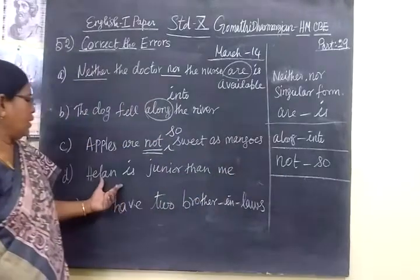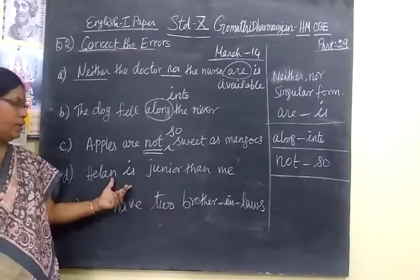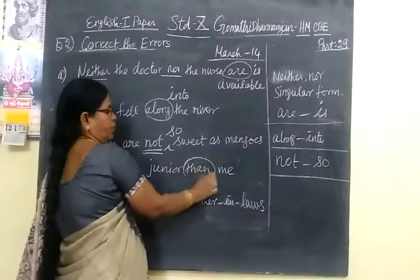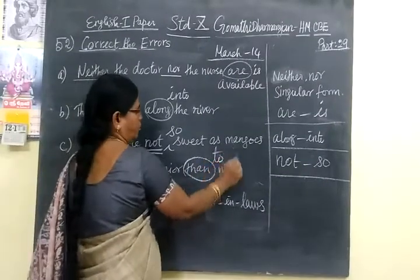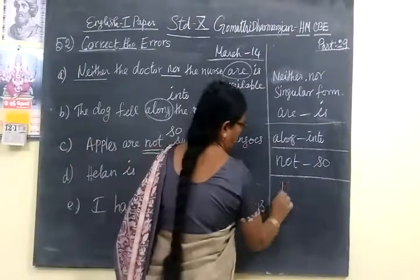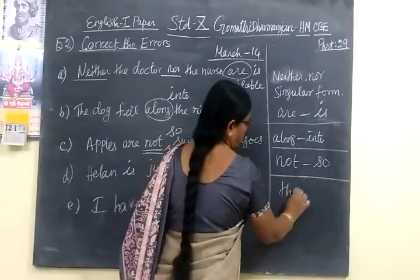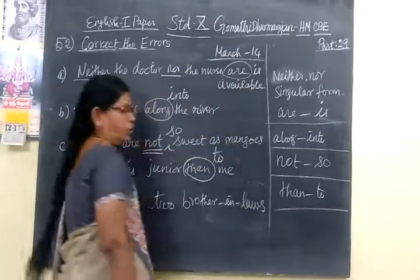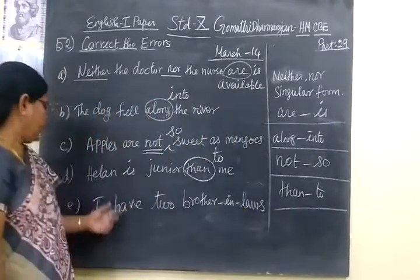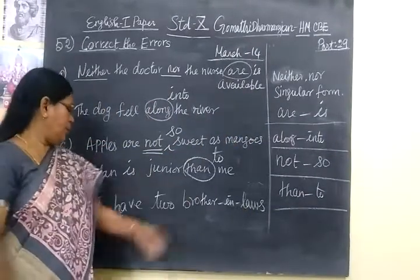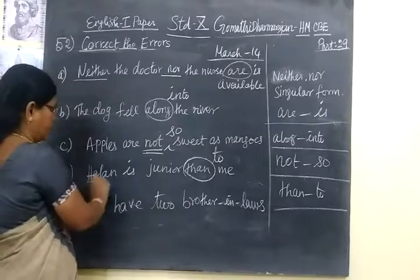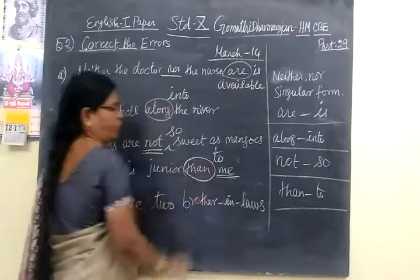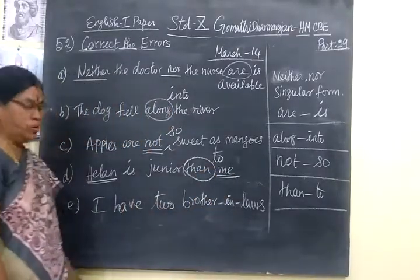'Apples is junior than me.' The keyword is 'junior' — for comparative adjectives like 'junior,' instead of 'than' you have to use 'to.' Two persons are being compared here, so instead of 'than' you have to use 'to.' Correction: 'junior to me.'